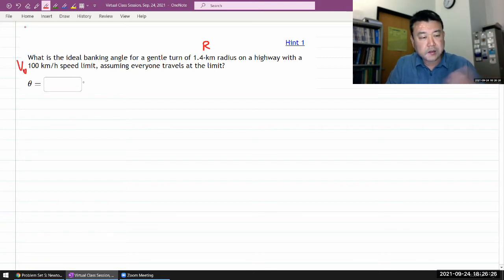So this is going to be our R, radius of curvature. This is going to be our speed of the traveling vehicle. Let me call that V, understanding the V is going to be constant speed limit, assuming everyone travels at the... oh yeah, I was assuming.